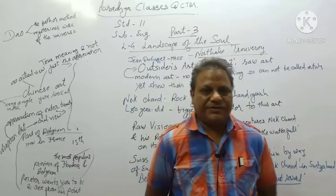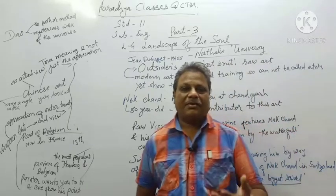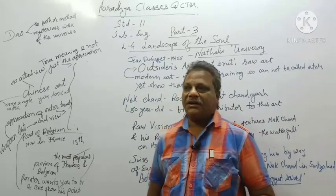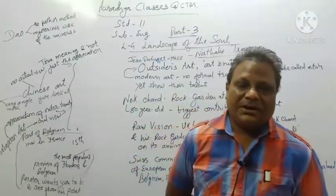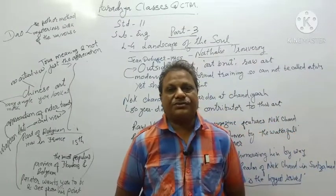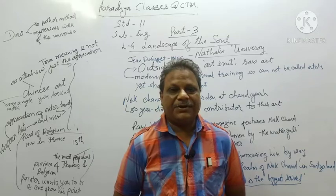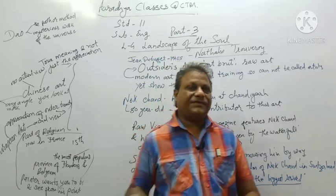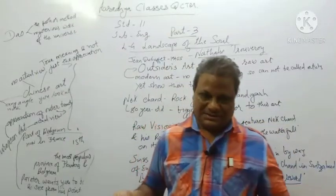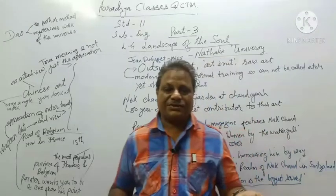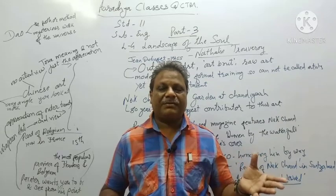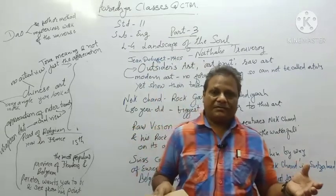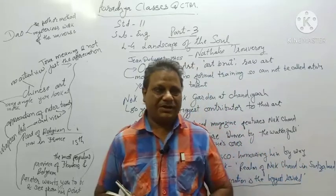Students, in my previous two videos we have gained much more understanding about your fourth lesson from Hornbill. The title of it is 'Landscape of the Soul' by Nathalie Trouveroy. In this lesson we already saw those two stories about Chinese art and one particular story about European art, and in the last video we also saw how in Chinese art the landscape means Shanshui, what is the meaning of it, how the interaction takes place, how it is connected to the mountain and water. So all those things must be clear in your mind.